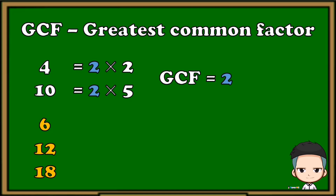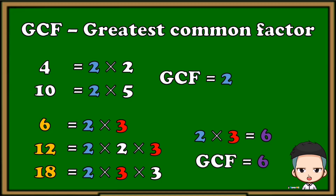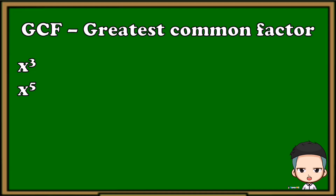Let's have another example. We have here 6, 12, and 18. Let's find their prime factors first. The prime factors of 6 are 2 and 3. The prime factors of 12 are 2, 2, and 3. And the prime factors of 18 are 2, 3, and 3. They have common factors of 2 and 3. Since they have two common factors, we need to multiply these two common factors to find the greatest common factor, which is 6.